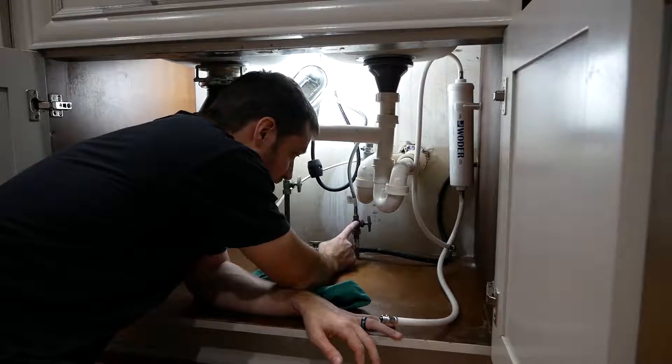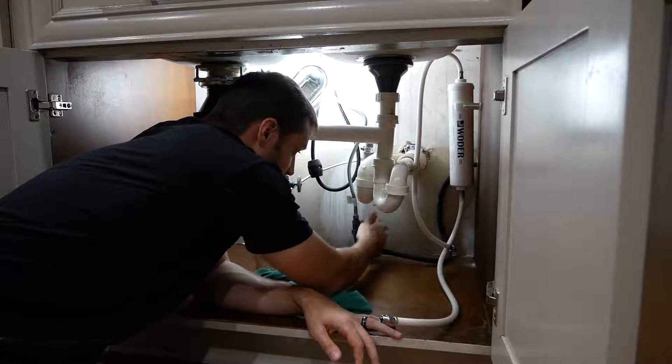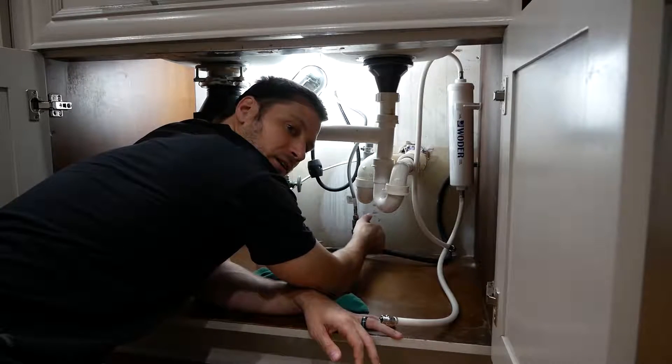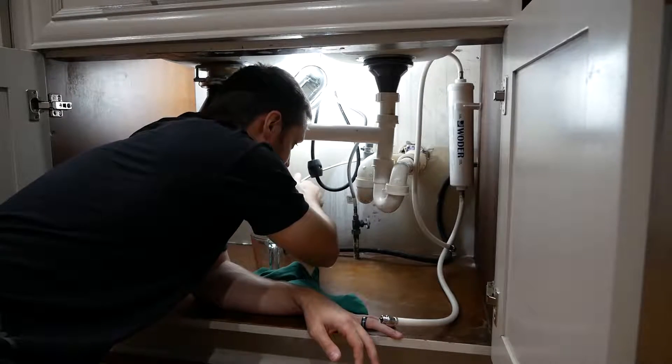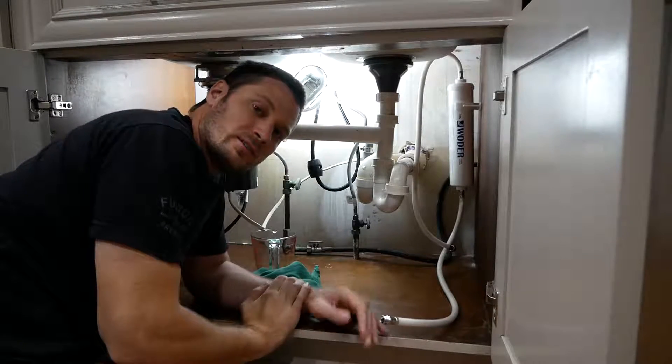So this is the main cutoff for the cold side. I'm just going to twist that clockwise until it's good and tight. And I'll do the hot water side as well. And so now I should be ready to disconnect the water line.